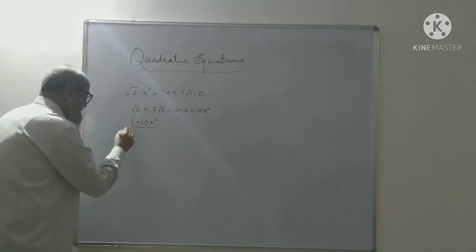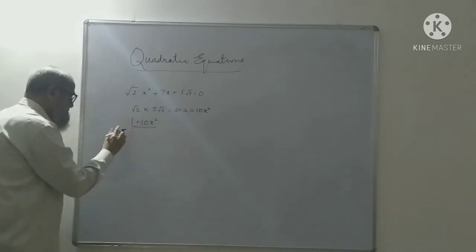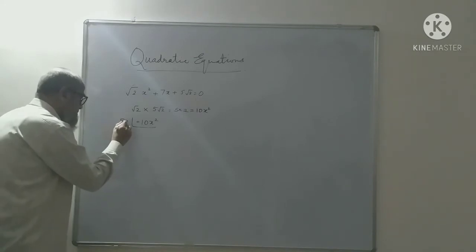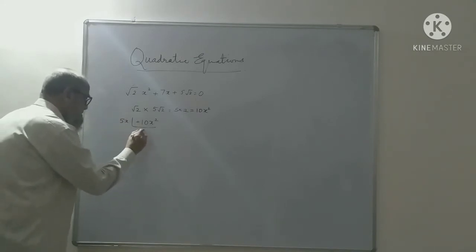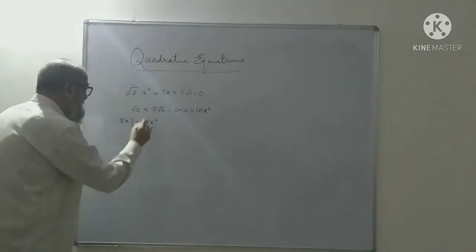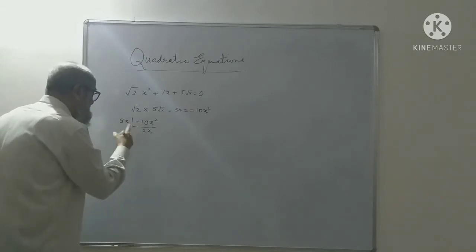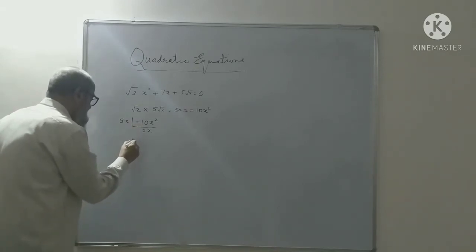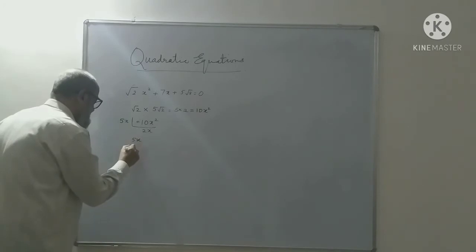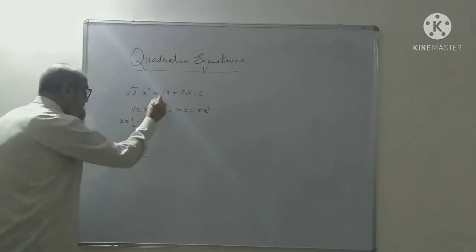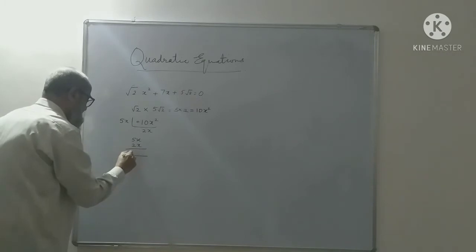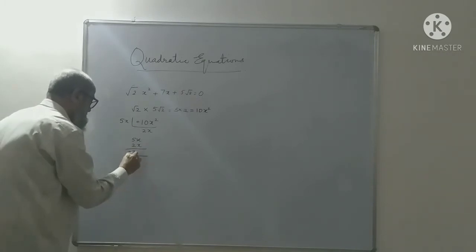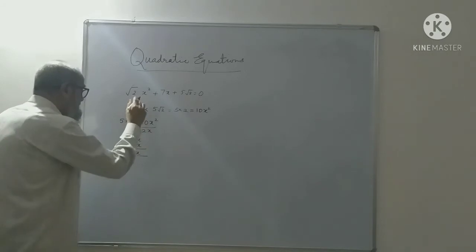The factors — the splitting — it can be split into 5x and 2x. Now, both should be plus or both should be minus. The sum of 5x plus 2x is 7x, which is the middle term. So both should be plus, and it can be split.